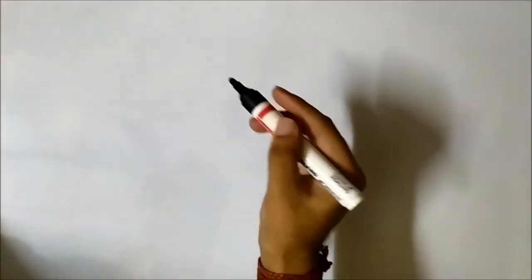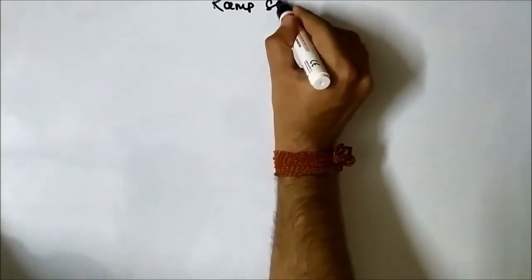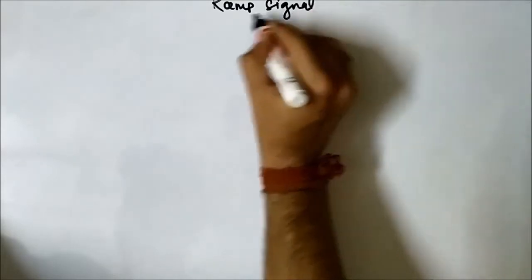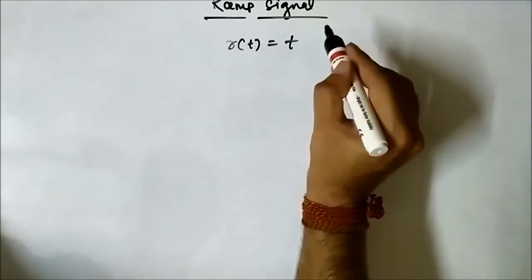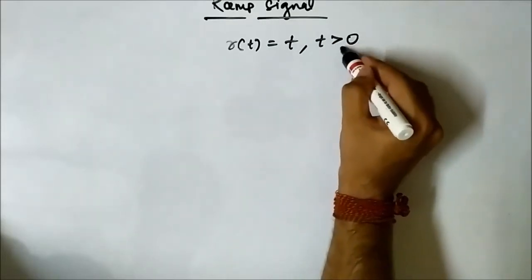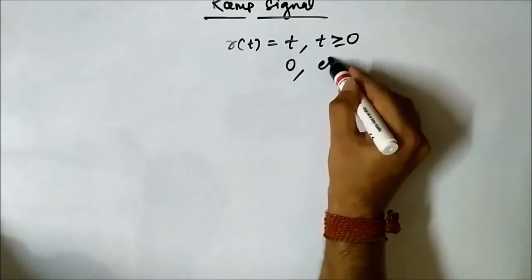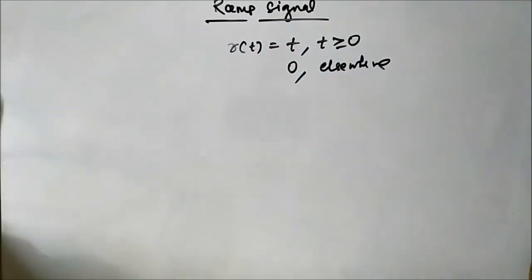Previously we discussed the shifting operation performed on a unit step signal, where we perform the shifting operations directly. Here we will discuss the same on a ramp signal. We will perform the shifting operation on that.